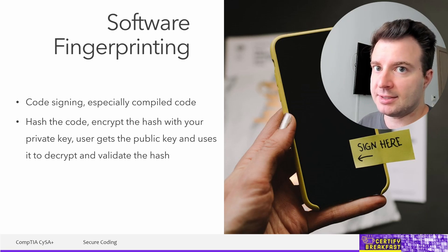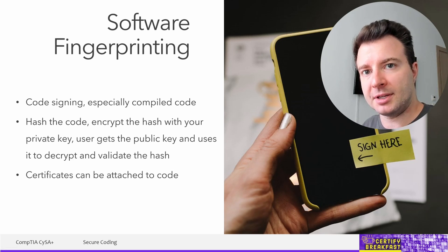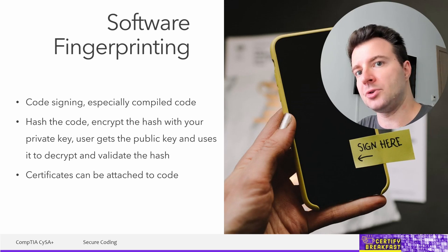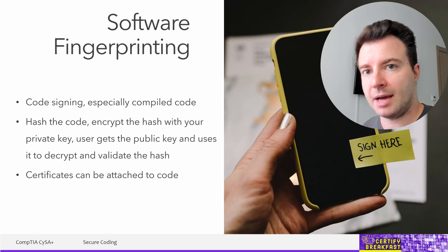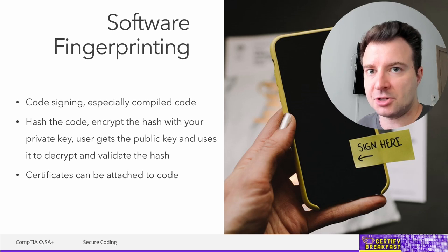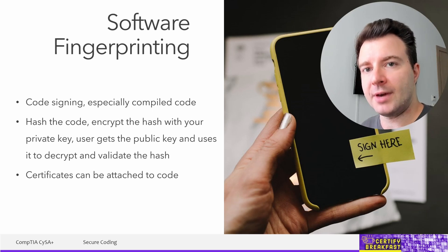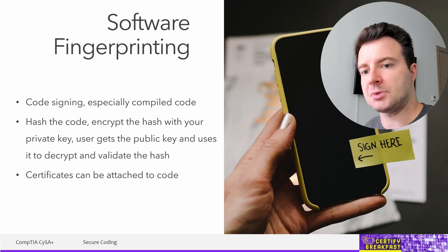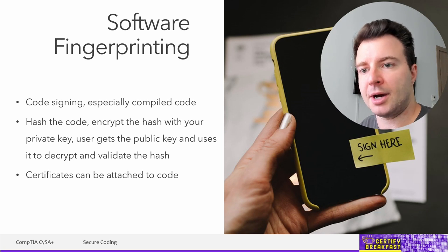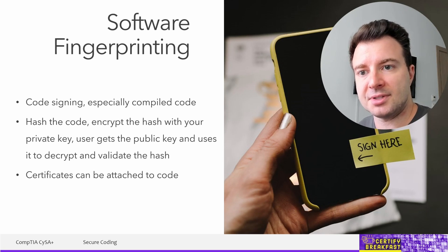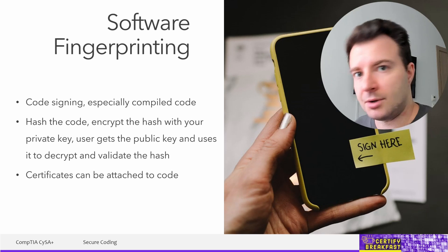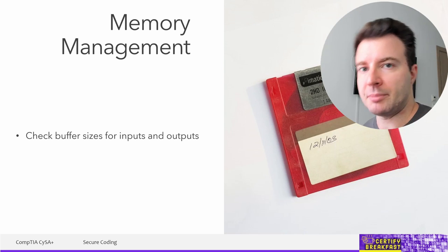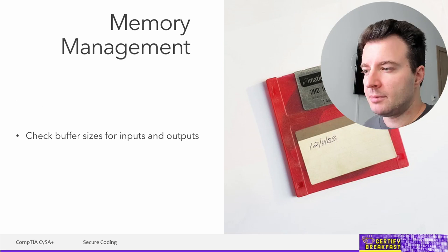In most cases, the public keys are attached directly to the application — it comes pre-packaged with the vendor certificate. You've probably noticed warnings in Windows whenever you try to download an executable from the internet — sometimes Windows complains that the binary hasn't been signed or the signature isn't recognized by your system.